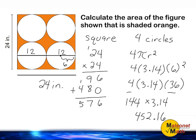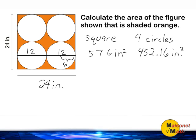That is the area of all four of the circles combined. Now that we know the area of the square and the area of the four circles, we simply subtract these two areas together and what you have left over will be the area of the section that is shaded in orange.